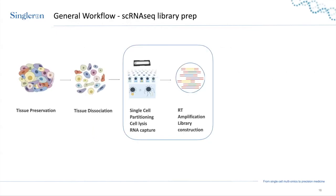After you get your perfect single cell suspension, you proceed to single cell partitioning, lysis, and RNA capture with our technology. This all happens in the microwell: after you load your cells, beads, and lysis buffer, the process takes 20 minutes on the chip. You then collect the samples with RNA on the beads and proceed to RT, cDNA amplification, and library construction.